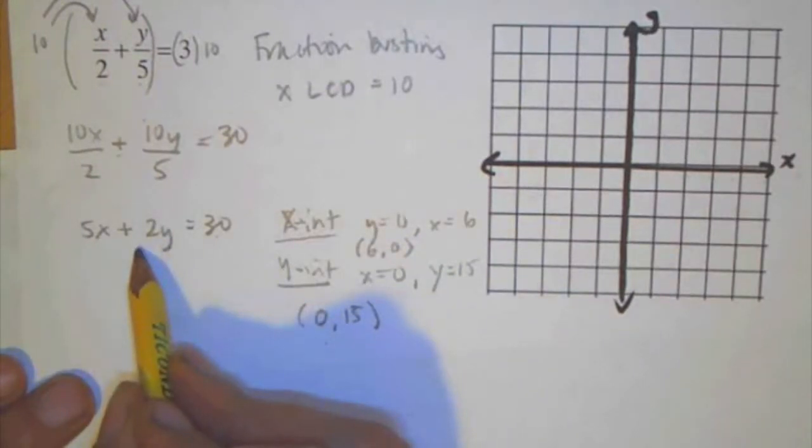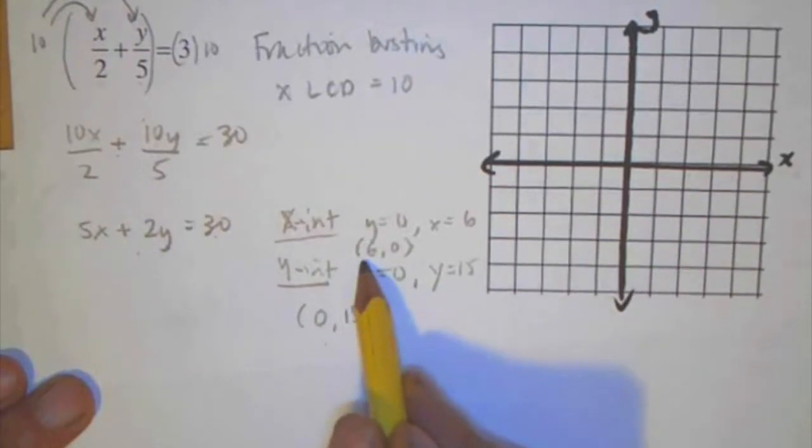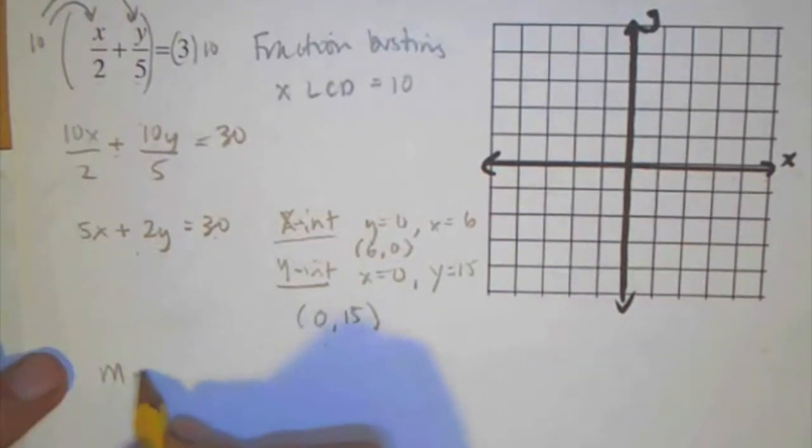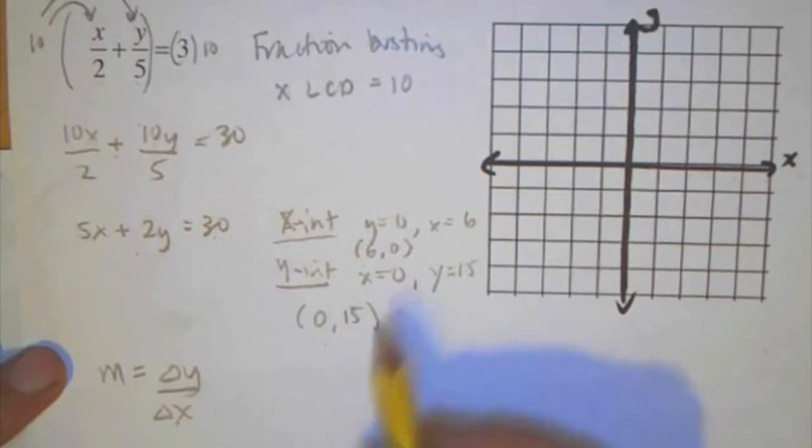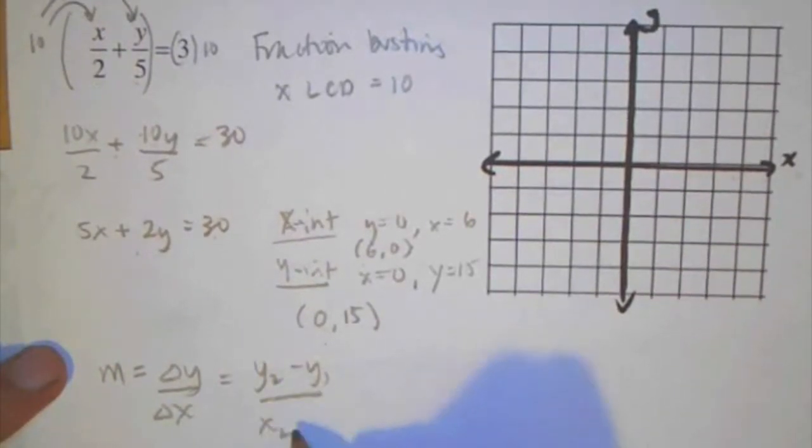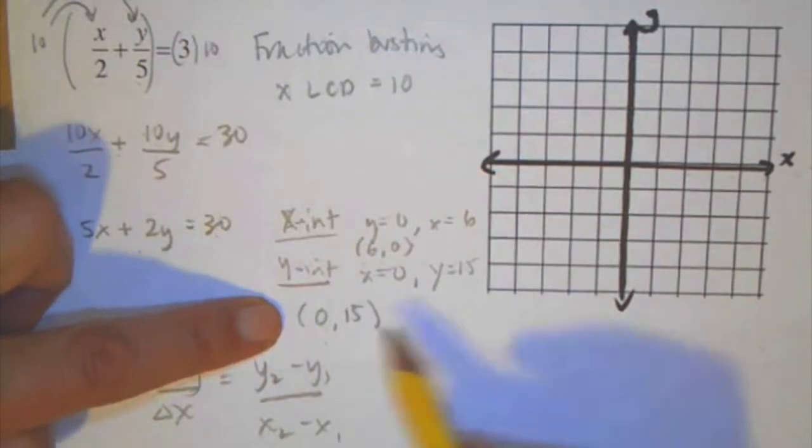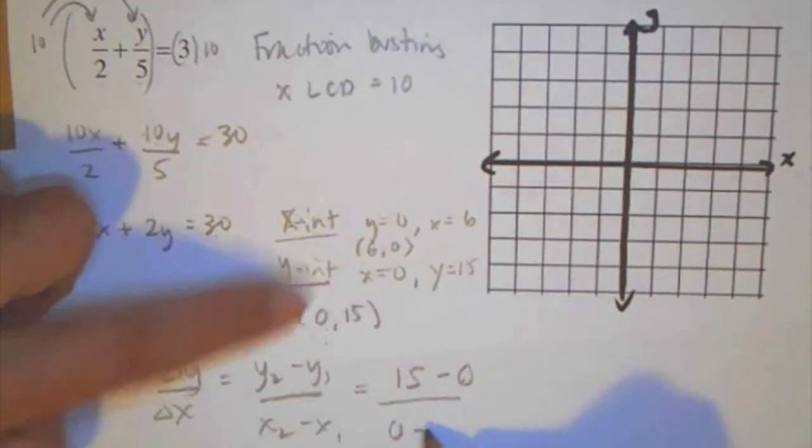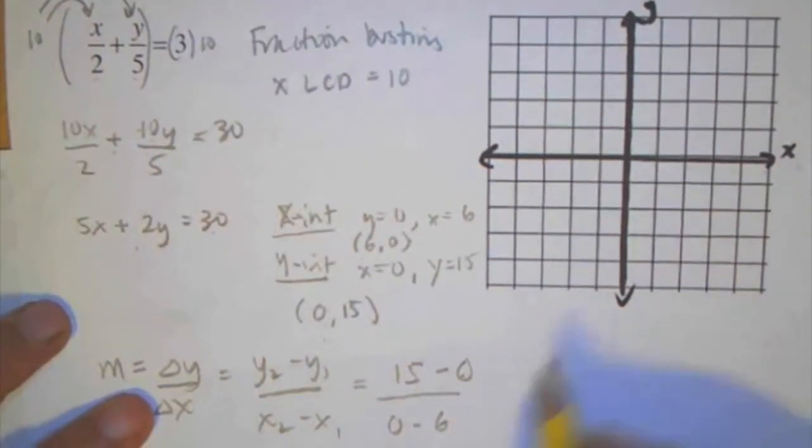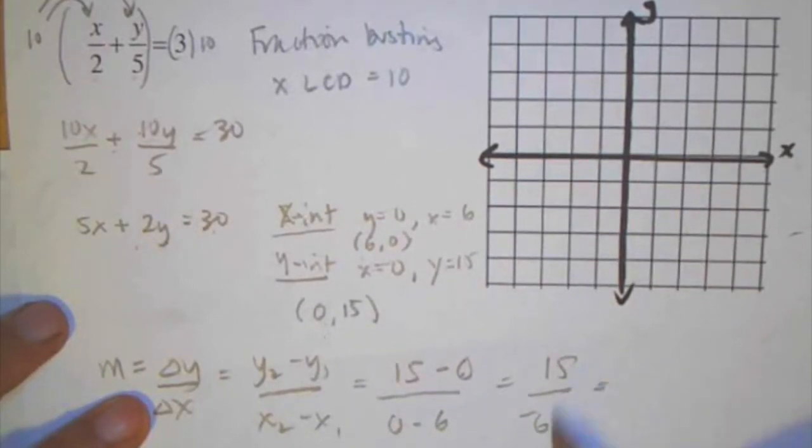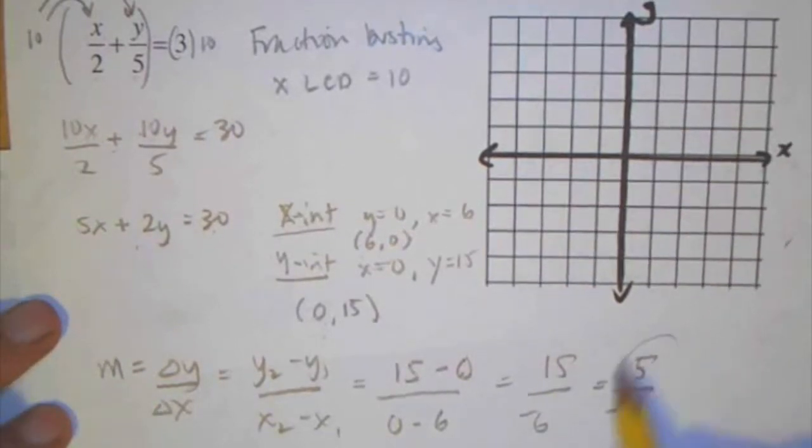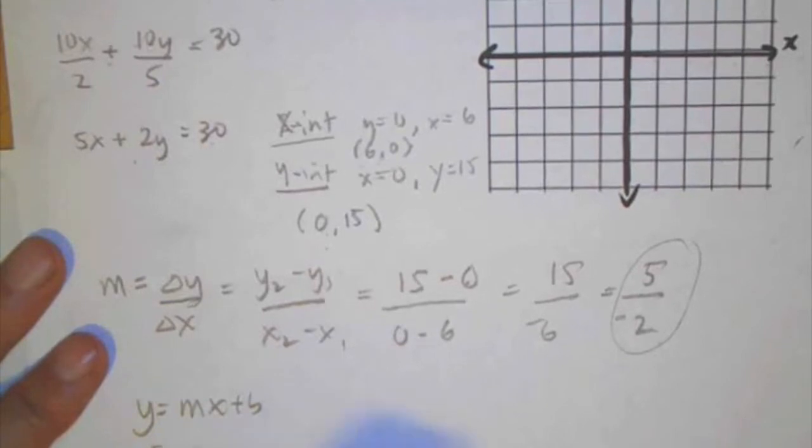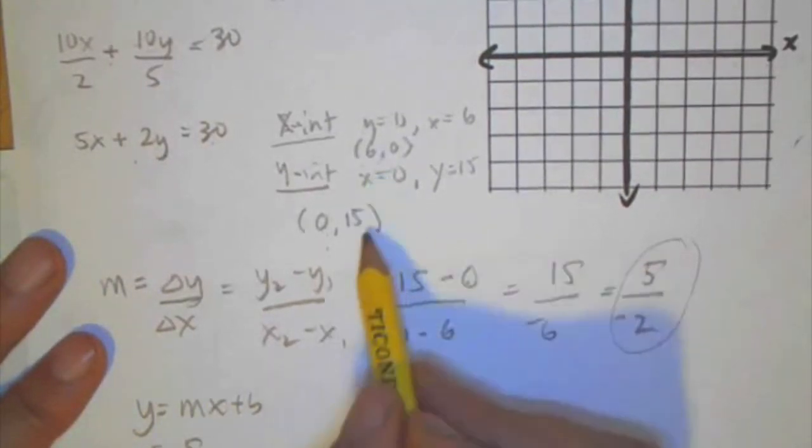If I wanted to convert this into slope-intercept form, I could use this information to help me find the change in y over the change in x. You know the slope formula, so you have those two points. Slope is the change in y over the change in x, or you can go y2 minus y1 over x2 minus x1. I'm just going to make this my first point. So 15 minus 0 over 0 minus 6. That's a whole other video in and of itself. So I have 15 over negative 6. Simplifying the fraction, 5 over negative 2. So this is my slope. And then I can put it into y equals mx plus b form, 5 over negative 2x plus my y-intercept is 15.